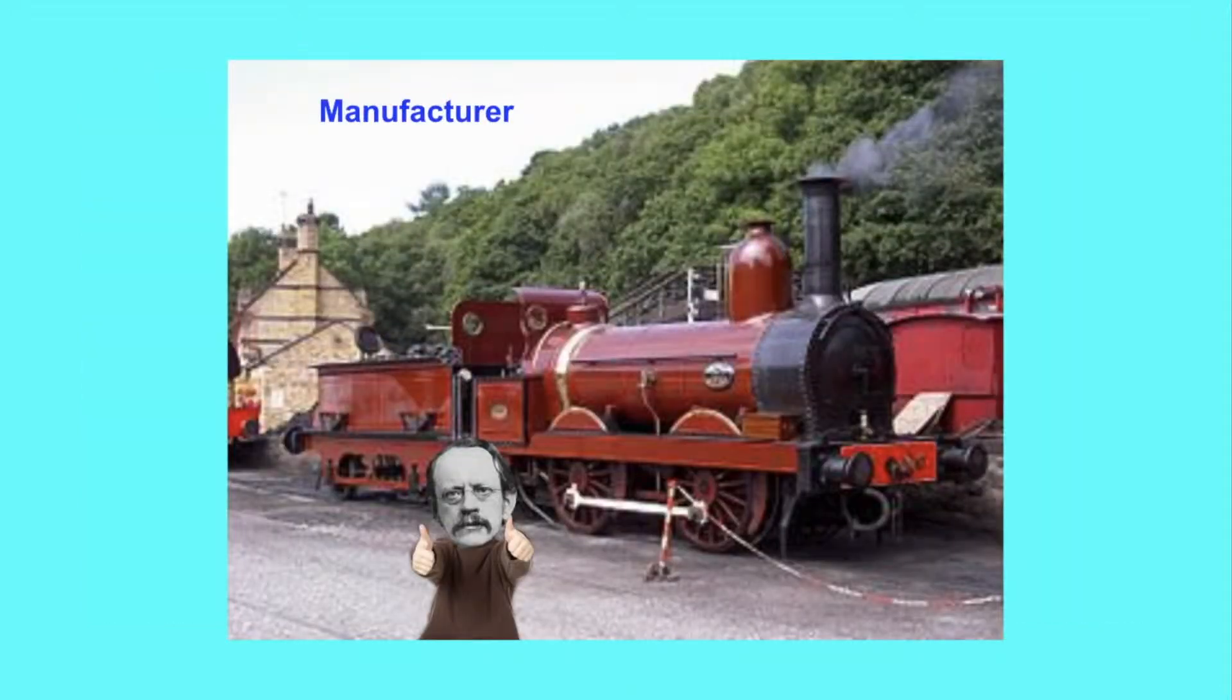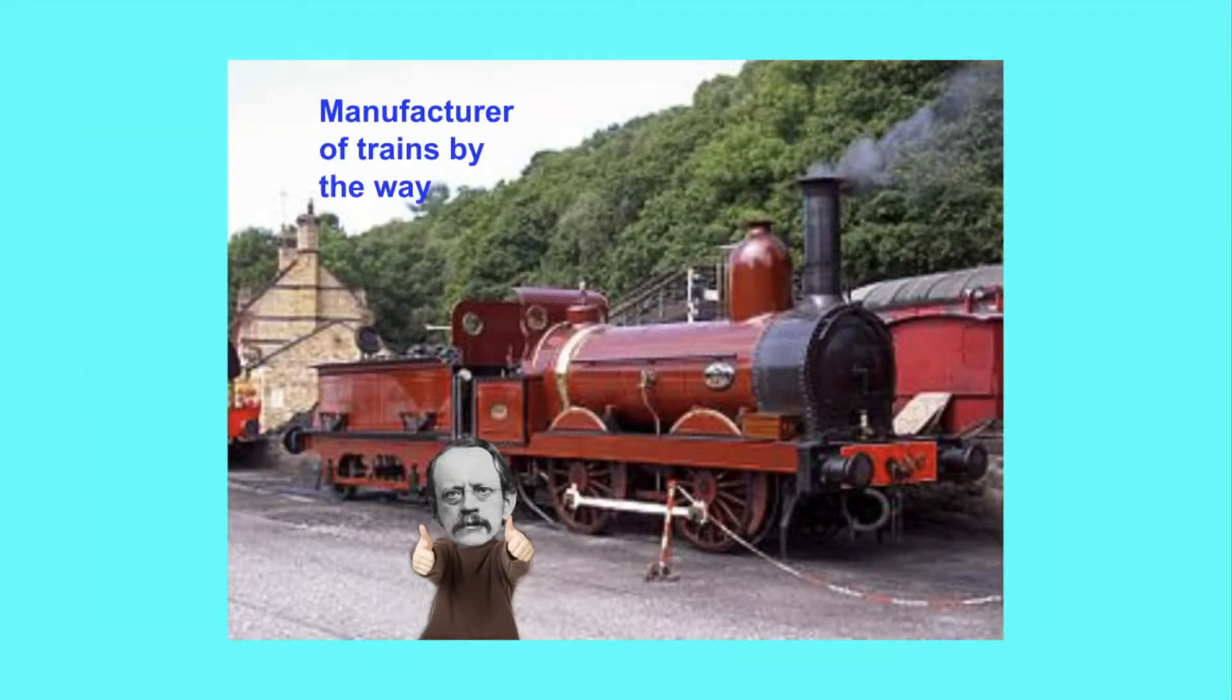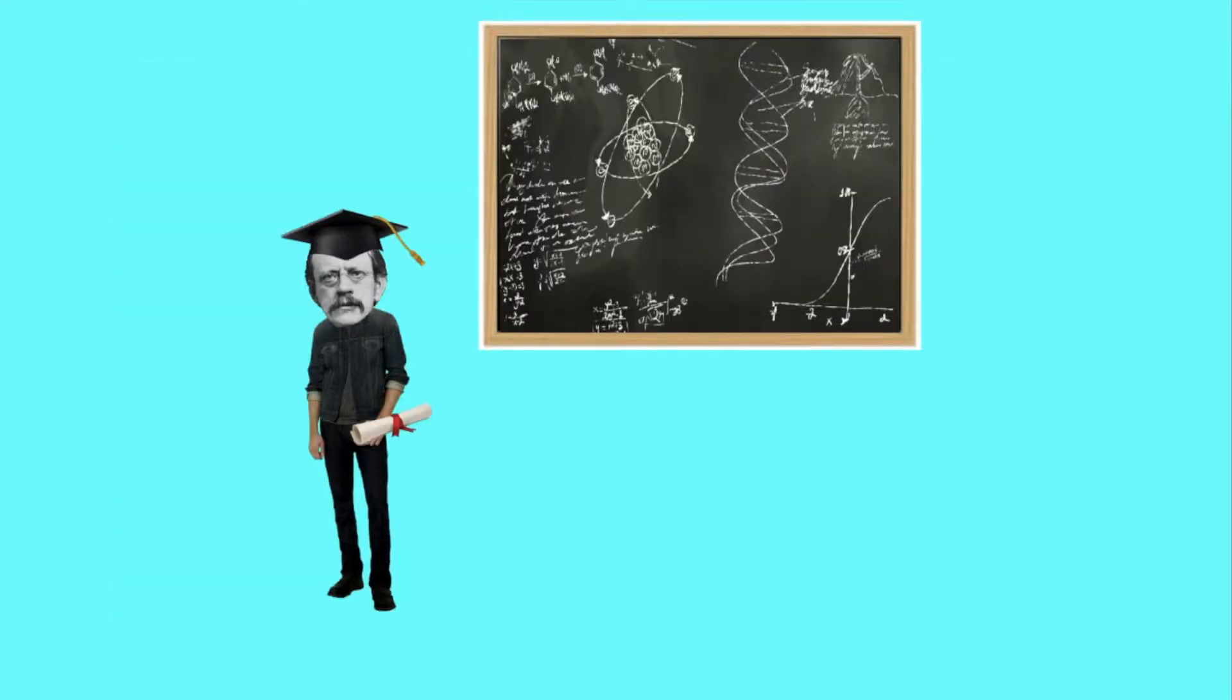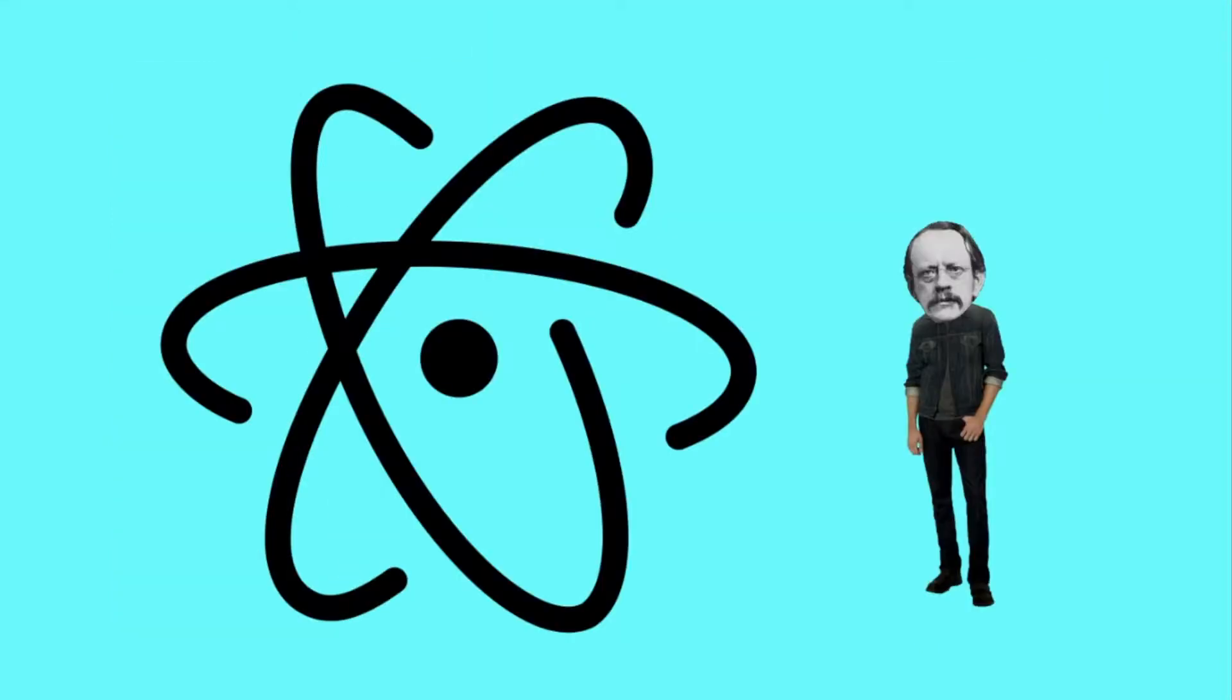Although he planned on working in the engineering industry as an apprentice for a local manufacturer, he decided against it after his father passed in 1873. He then moved to Trinity College in 1876, where he would go to receive a degree in mathematics. After graduating, he developed an interest in atoms, leading him to study more about physics and atomic structure.